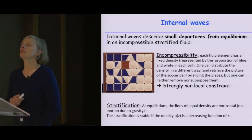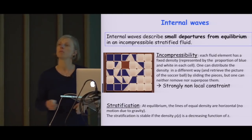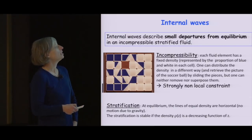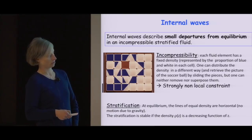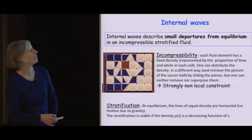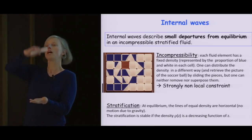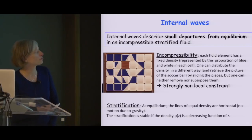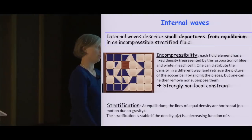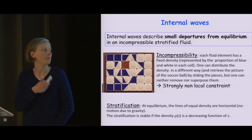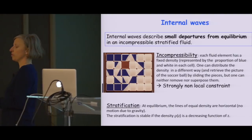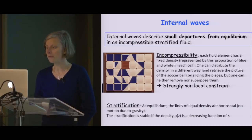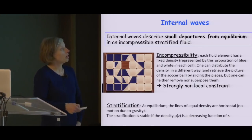Stratification means that at equilibrium — in the absence of forcing or initial perturbation — you start with a fluid that has a non-homogeneous density, but this density is given by a profile which depends only on z, the vertical coordinate. We assume this equilibrium is stable, meaning the light fluid is above the heavier fluid — this is called stable stratification. At equilibrium, the only forces are gravity and the Archimedes force, and everything is at rest. We are interested in describing the fluctuations with respect to this equilibrium.